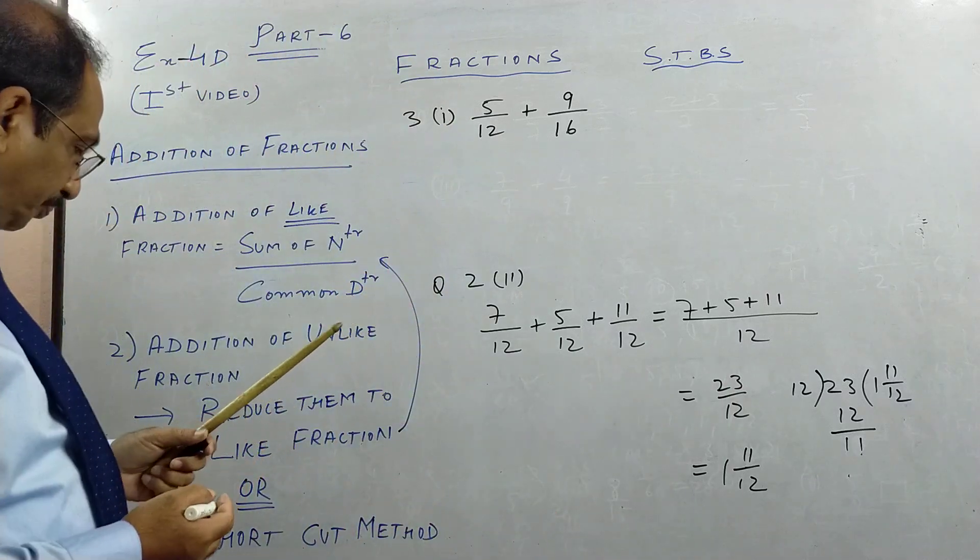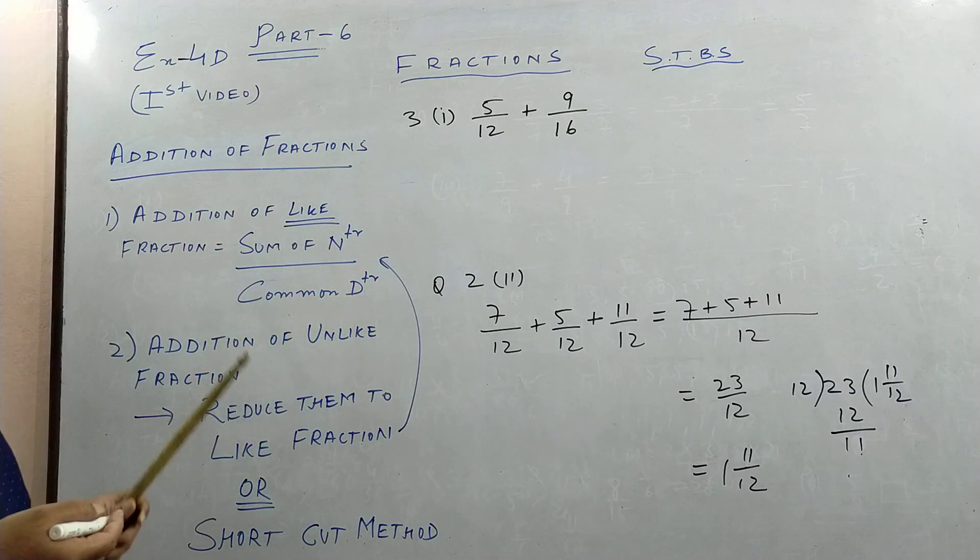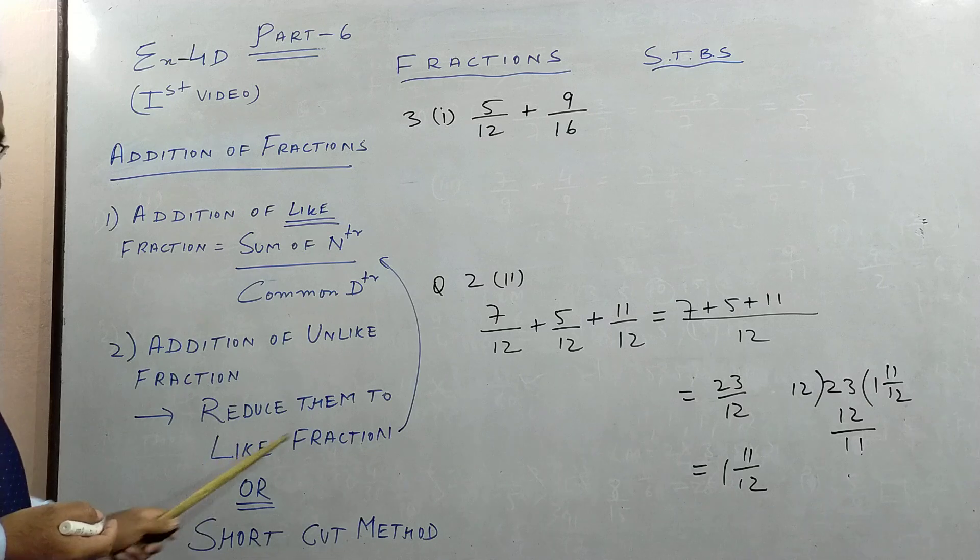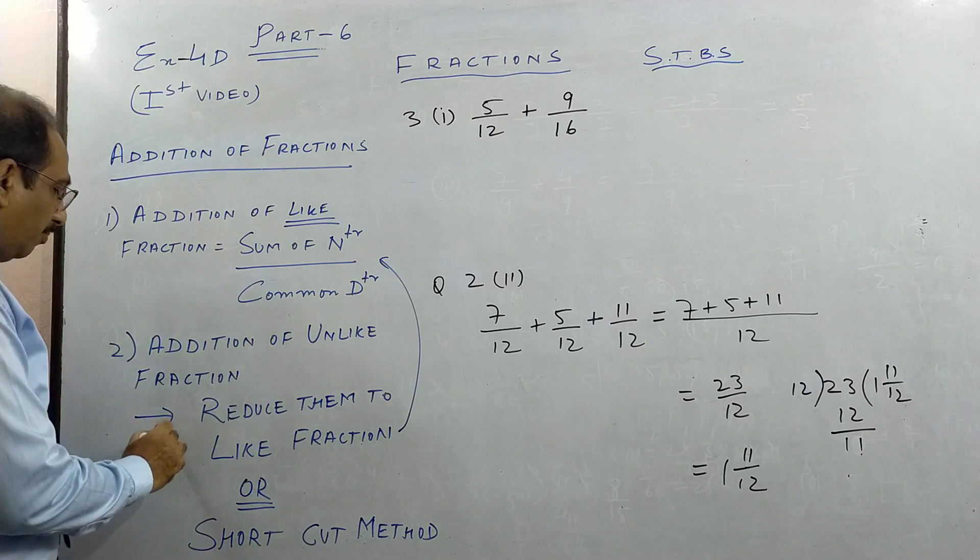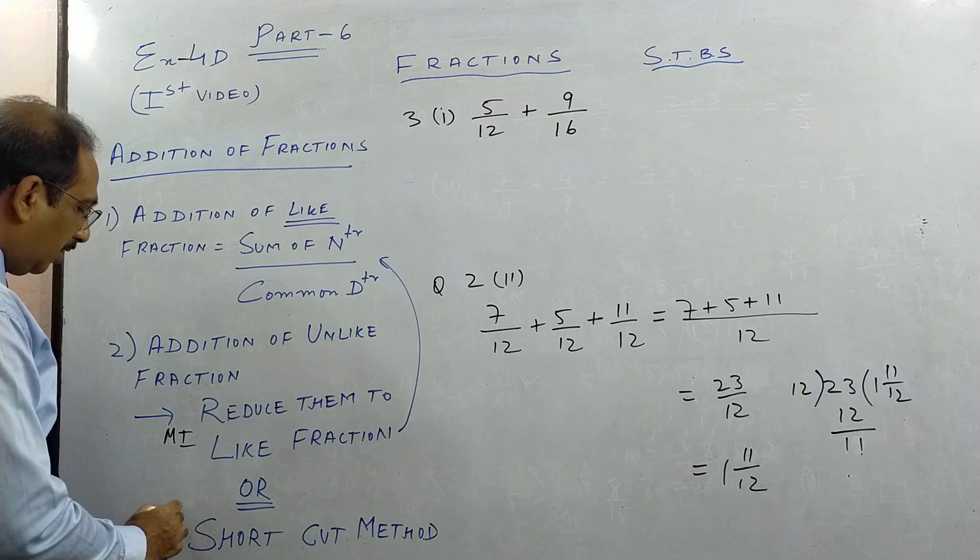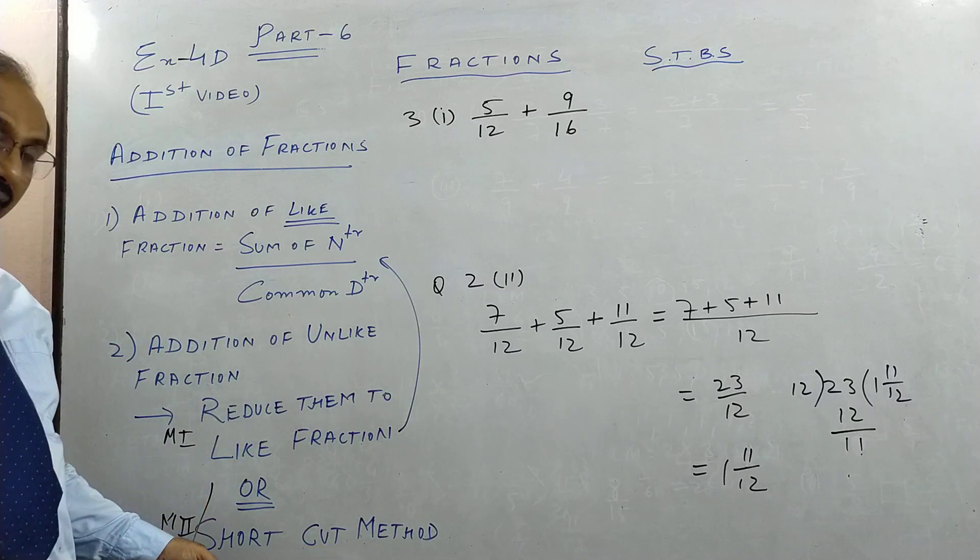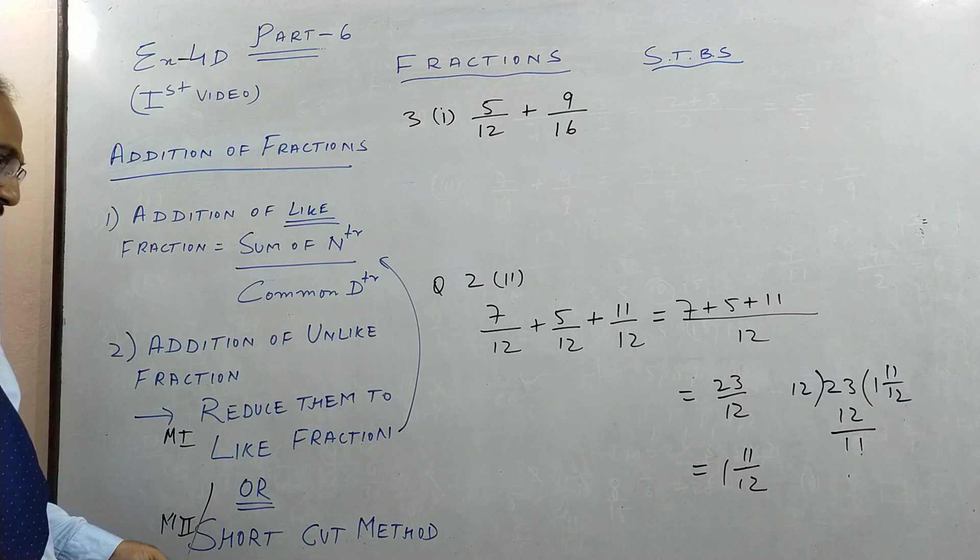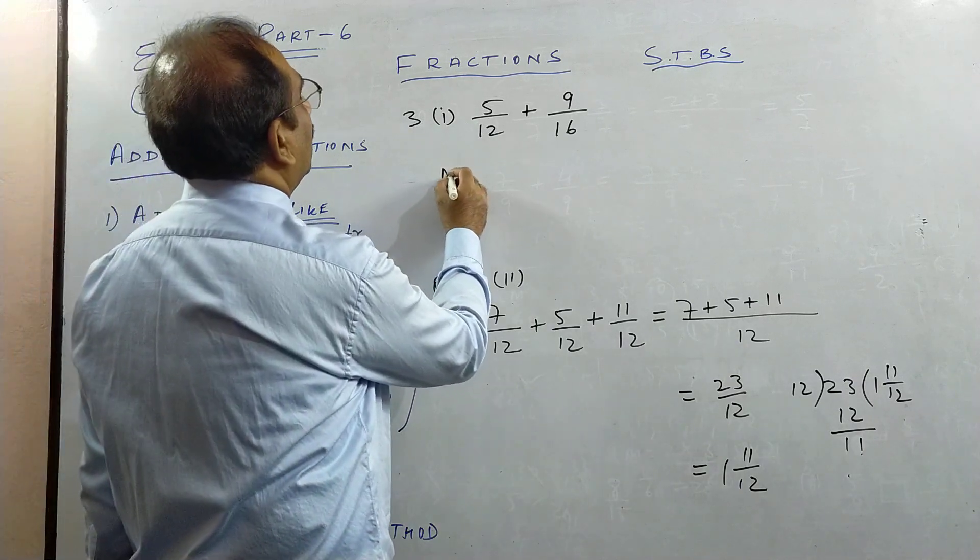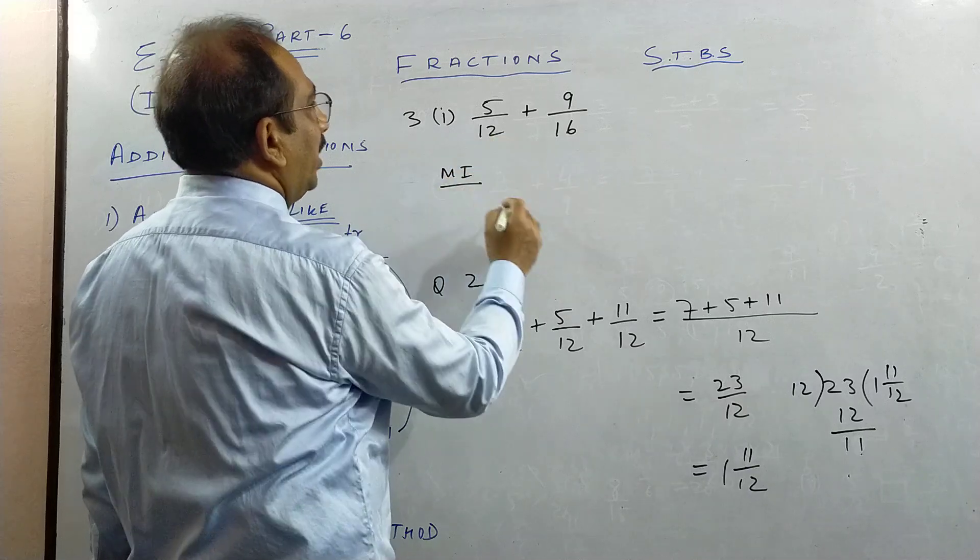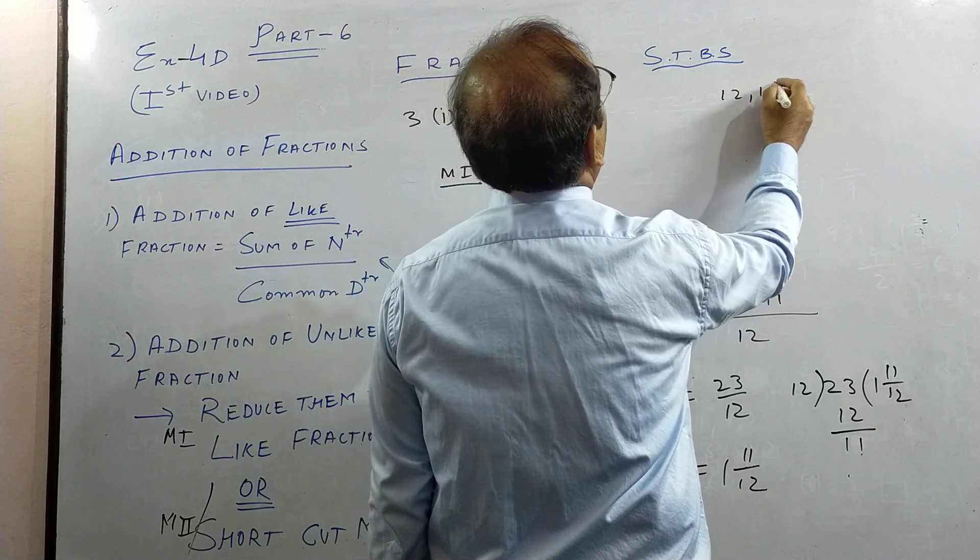Then we move on to your addition of unlike fractions. So unlike fractions, what will you see? There are two methods. Reduce them to like fractions. So first method, I will call it method 1. And this I will call method 2. Method 2 children, it's very nice. Ultimately you have to do like this. But for you, maybe you see which one you like. So first, method 1 I will show you is here.